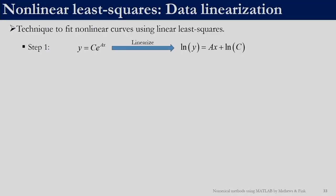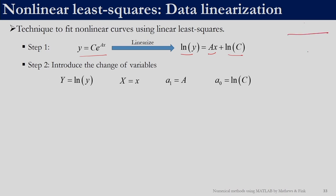Another way to solve this non-linear regression problem is data linearization. Our model was y = c·e^(ax). We take ln on both sides: ln(y) = ln(c) + a·x·ln(e). Since ln(e) = 1, we have ln(y) = ln(c) + a·x. Now, since y is known, we can calculate ln(y). Let us denote it as uppercase Y. If we let uppercase X = lowercase x, then this becomes Y = a_0 + a_1·X — a linear regression problem.